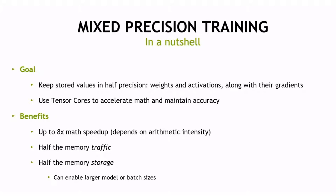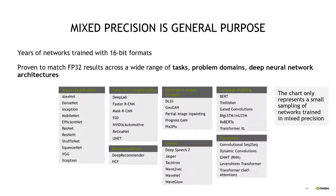Our goal is to keep stored values in half precision — weights, activations, and their gradients — and use Tensor Cores to accelerate math while maintaining accuracy. The benefits are up to 8x math speedup, half memory traffic, and half memory storage. Years of networks trained with 16-bit formats prove FP32 accuracy is maintained across a wide range of tasks, problems, domains, and deep neural network architectures. If you have a model and want to train it, use automatic mixed precision or TensorFloat 32 and train on Tensor Cores on NVIDIA GPU.